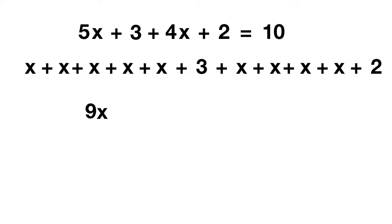In the rest of our equation we have the plus 3 and the plus 2. If you combine 3 and 2, you get plus 5. On the other side of the equals sign it just equals 10. Now this looks a lot more familiar and we can solve.